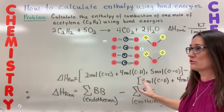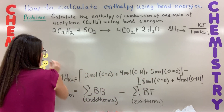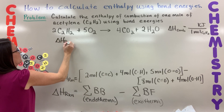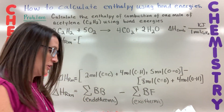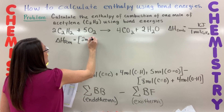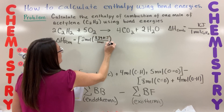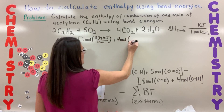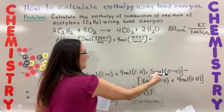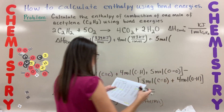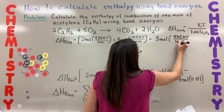Now I've got all the bonds listed and I need to go to my bond enthalpy table and look up the values. Going to the chart: two moles of C≡C triple bonds — that's 839 kilojoules per mole. Four moles of C-H single bonds — that's 413 kilojoules per mole. Five moles of O=O double bonds — that's 495 kilojoules per mole.